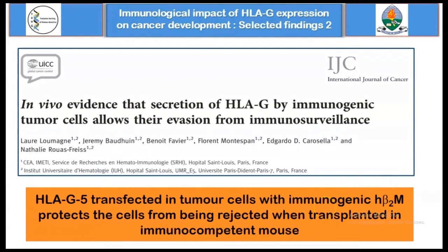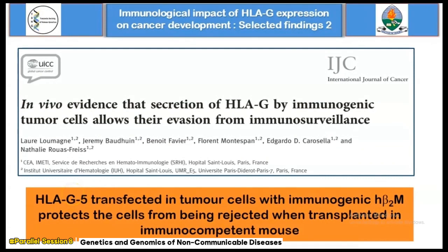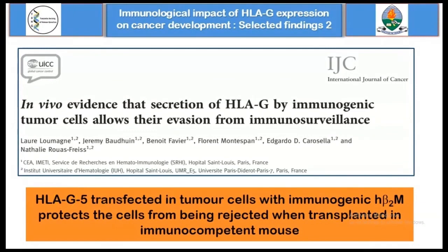In that study, tumor cells were transfected with both human beta-2 microglobulin and HLA-G, then injected into immunocompetent mice. Mice that received tumor cells transfected with human beta-2 microglobulin only were able to reject those tumor cells, but mice which received tumor cells transfected with both human beta-2 microglobulin and HLA-G could not reject them. This indicates that HLA-G protected the injected tumor cells from being rejected in immunocompetent mice.